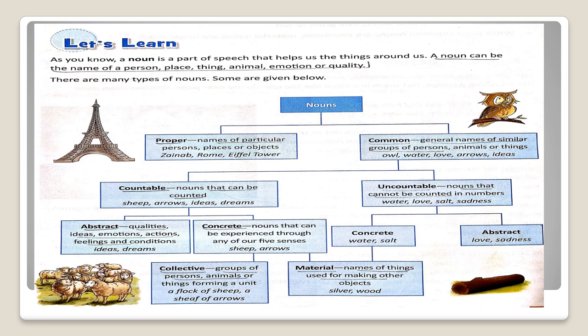Uncountable nouns use different units of measurement. For example, two liters of water, one gram of salt. While most common nouns are countable, material nouns are uncountable.